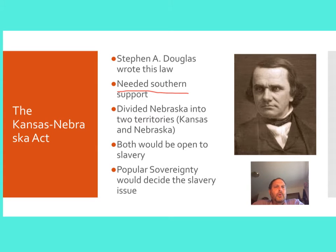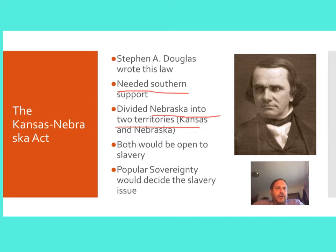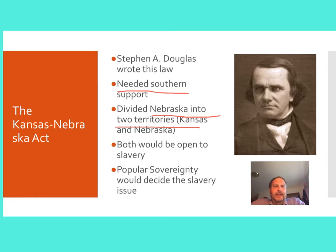So he wrote this law, and it was called the Kansas-Nebraska Act. What it did was it split Nebraska into two territories. The northern territory was Nebraska, and the southern territory was Kansas. Now, one of the things you need to think about here is that the Kansas Territory is north of the Missouri Compromise Line.